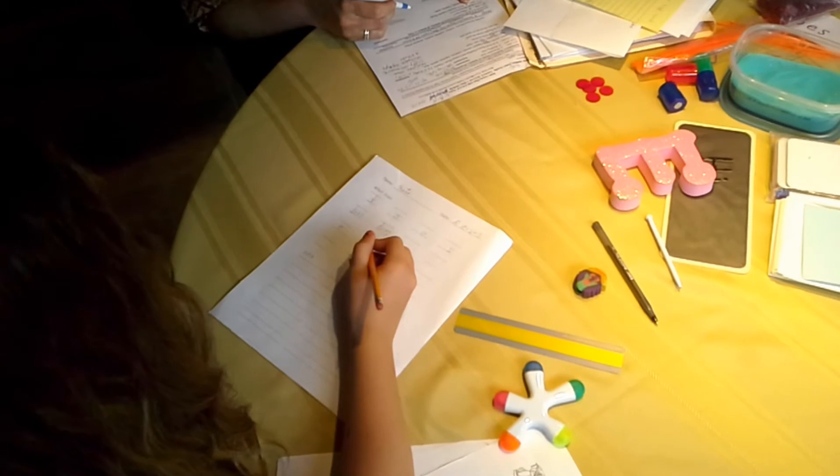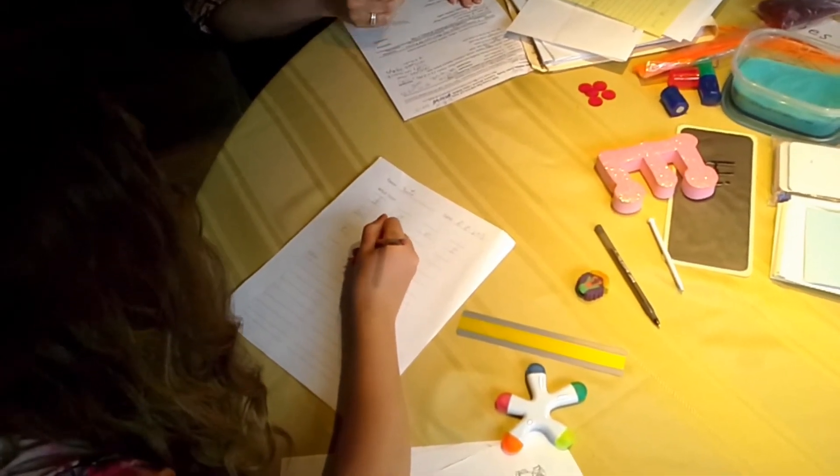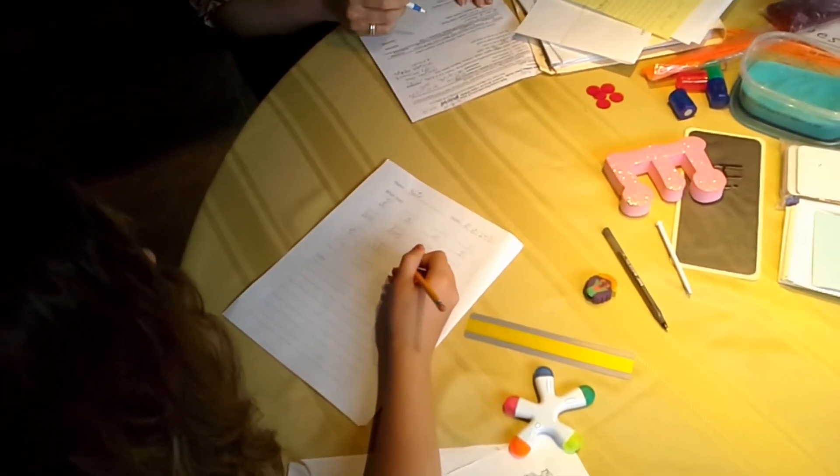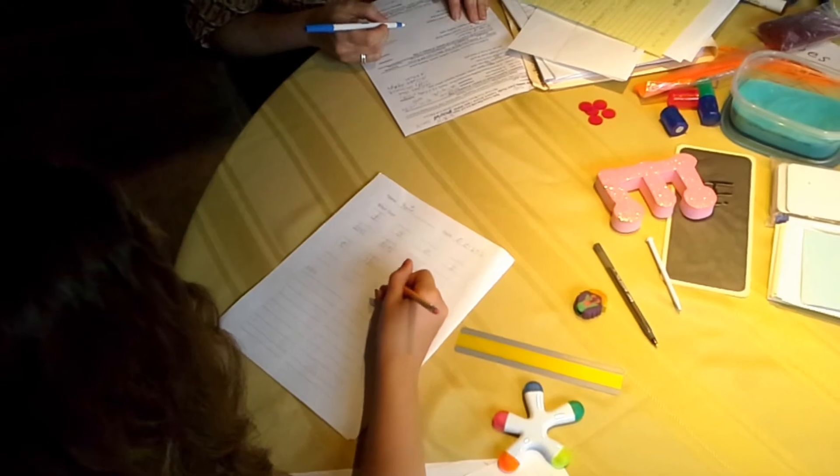Say 'shh.' What says 'shh'? S-H says 'shh.' Write the name. S-H says 'shh.' Say 'uh.' Uh. What says 'uh'? U says 'uh.' Write the name. U says 'uh.'